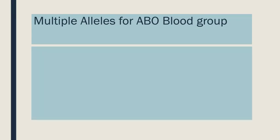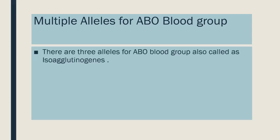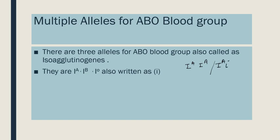We are considering the example of the ABO blood group system. There are three alleles for ABO blood group. These alleles are called isoagglutinogenes. They are represented by IA, IB, or I0. IA and IB are dominant. I0, also written as small i, is the recessive variety. So IA with IA forms a homozygous condition, and IA with small i forms a heterozygous condition. Similarly, IB with IB forms a homozygous condition, and IB with small i forms a heterozygous condition. IA and IB show co-dominance, and small i small i is the recessive condition, also written as I0 I0.